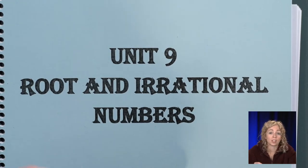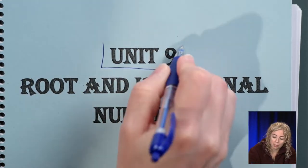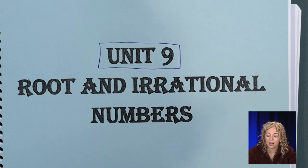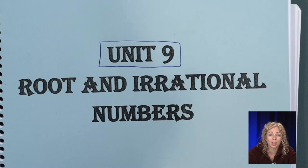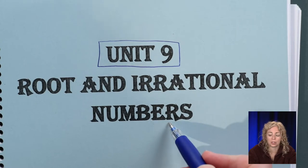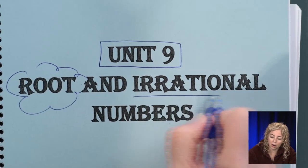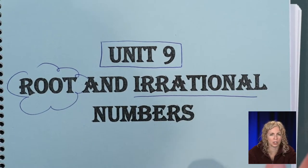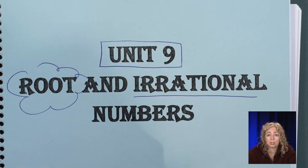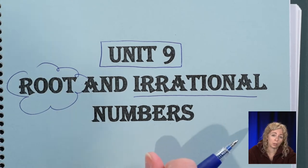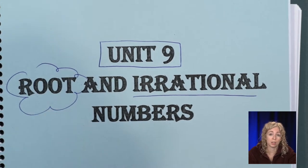Today we officially start unit 9, which is our second to last unit of the year. Unit 10 is data analysis, so the last book should say unit 10. This unit is called Roots and Irrational Numbers. Today we're going to focus on the roots piece, and tomorrow we will review irrational numbers. We talked about rational and irrational numbers in middle school, as well as number sets such as whole numbers, integers, and counting numbers, which all make up the set of real numbers.